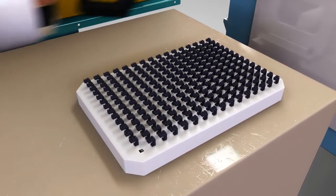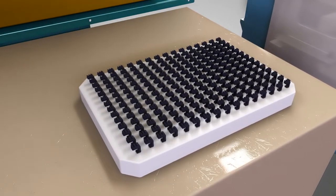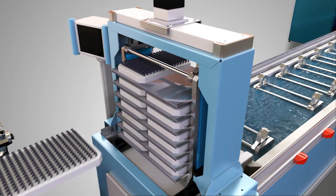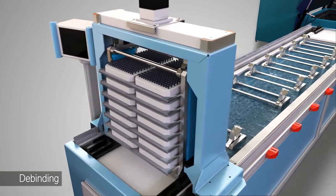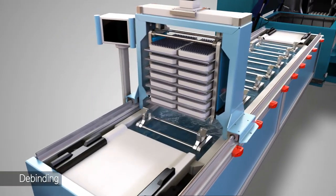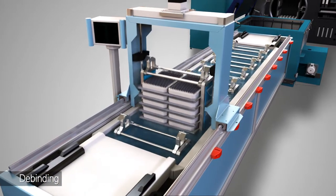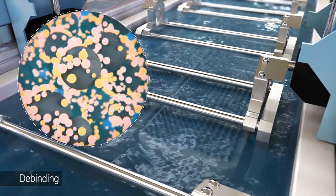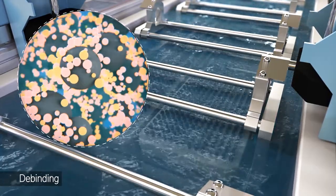The green parts are placed into trays which are stacked. This stack is then placed into a de-binding bath. About 50% of the binding materials are dissolved in this bath.